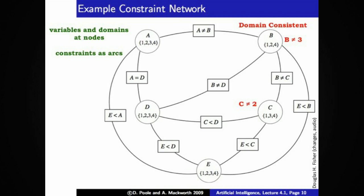A constraint network is a graphical way of representing a constraint satisfaction problem. Variables and domains are represented as nodes in a constraint network. Constraints are represented as arcs between these nodes, with the defining constraint shown in a rectangular box along these arcs. For example, on the far left, e must be less than a is represented as an arc between a and e. At node b, b does not equal 3 has already been removed from the domain of b. Likewise, c does not equal 2 has been accounted for in the revised domain for c. Unary constraints have been taken care of already, so the network is said to be domain consistent.